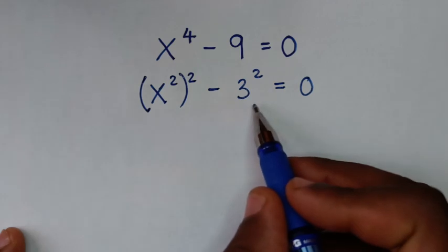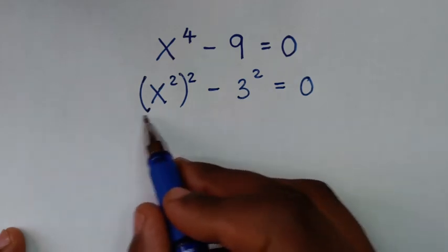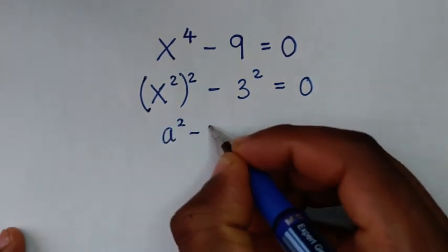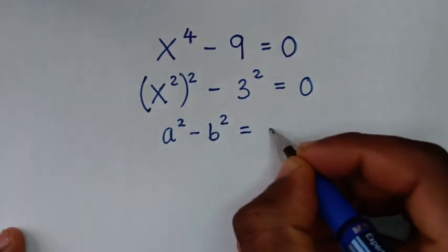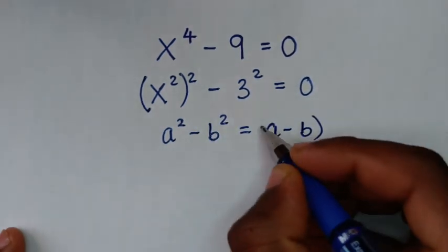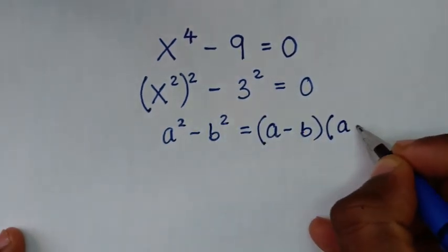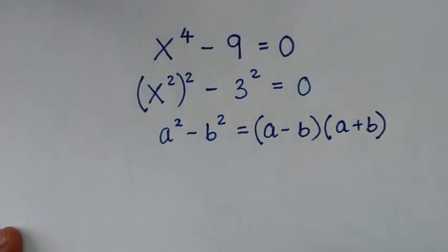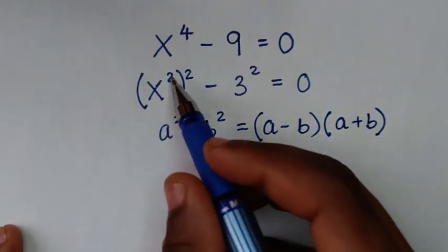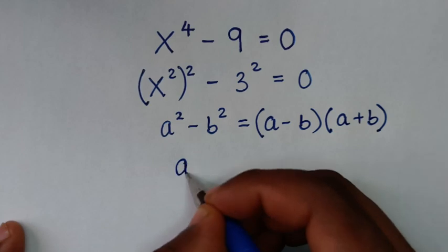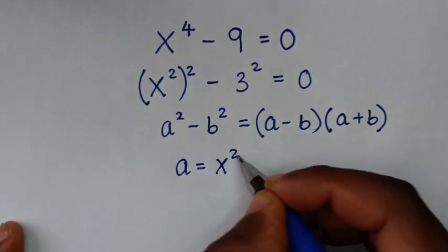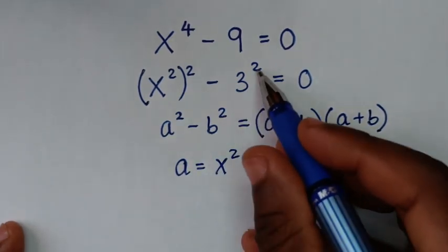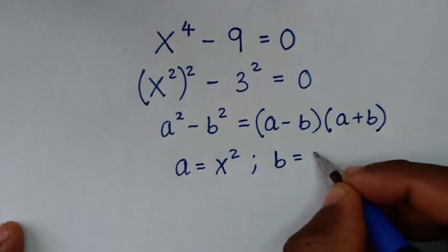From here it is in the form of a perfect square, so we will apply the difference of squares rule, which is a-squared minus b-squared equals a minus b, bracket, times a plus b, bracket. Comparing a-squared with x-squared, bracket, squared, we get a equals x-squared.